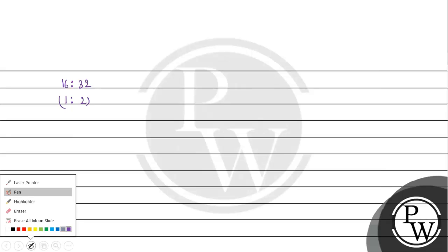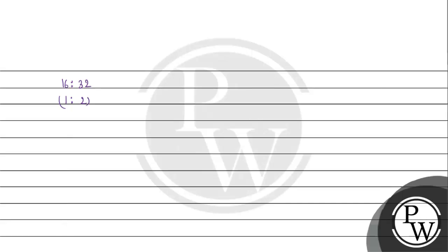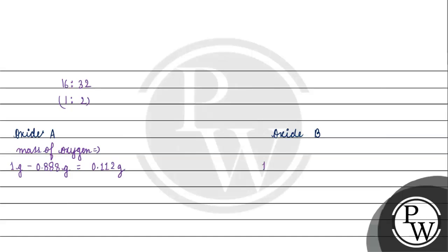Now, in our question, we have two copper oxides — Oxide A and Oxide B — both with 1 gram taken. In 1 gram of Oxide A, we have 0.88 gram of copper, so the oxygen present is 1 minus 0.88, which is 0.112 gram. For Oxide B, the copper present is 0.799 gram, so the mass of oxygen is 1 minus 0.799, giving 0.201 gram.